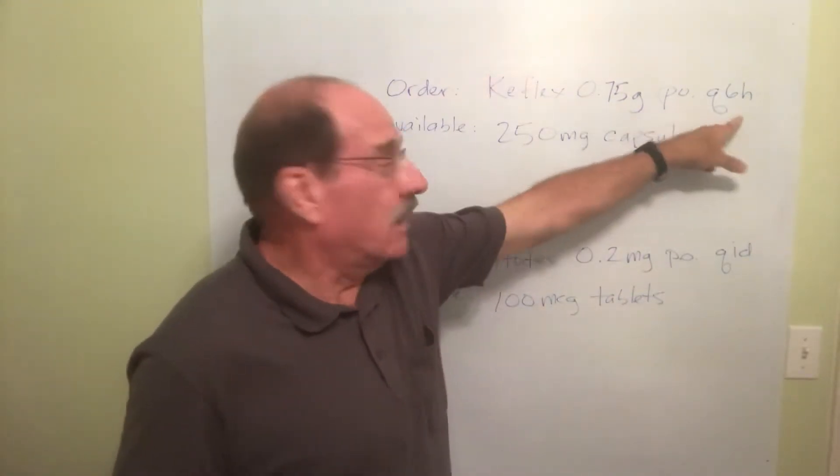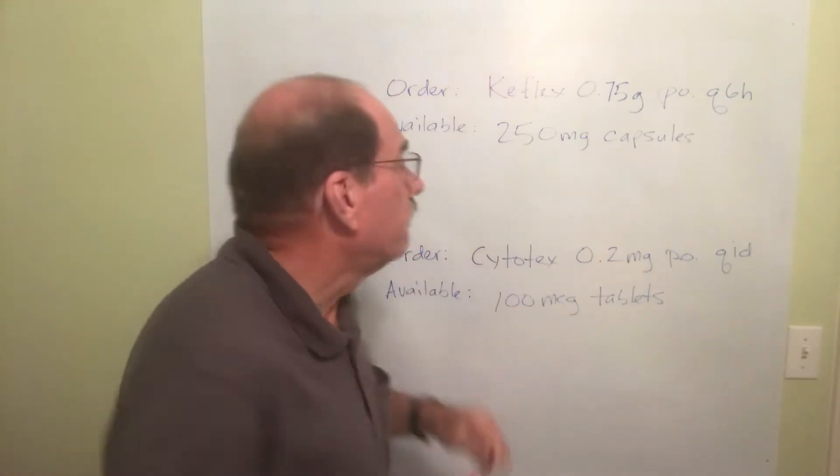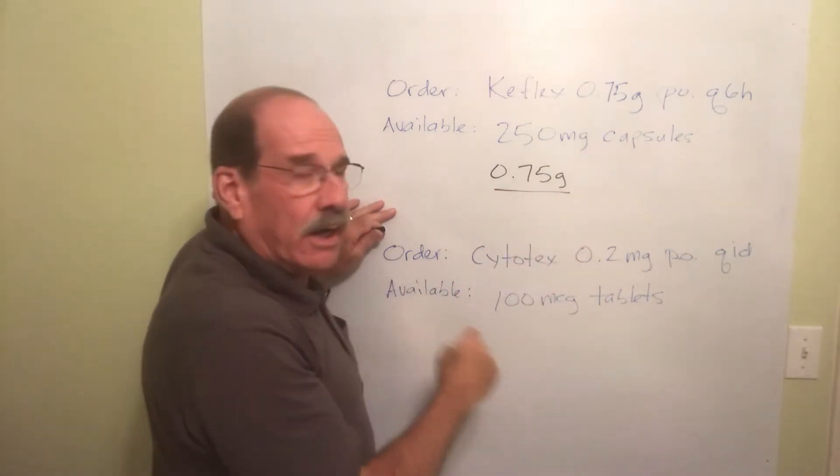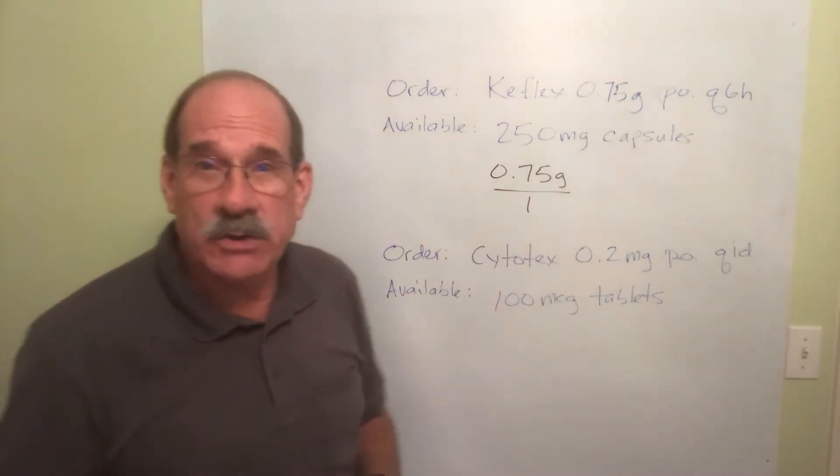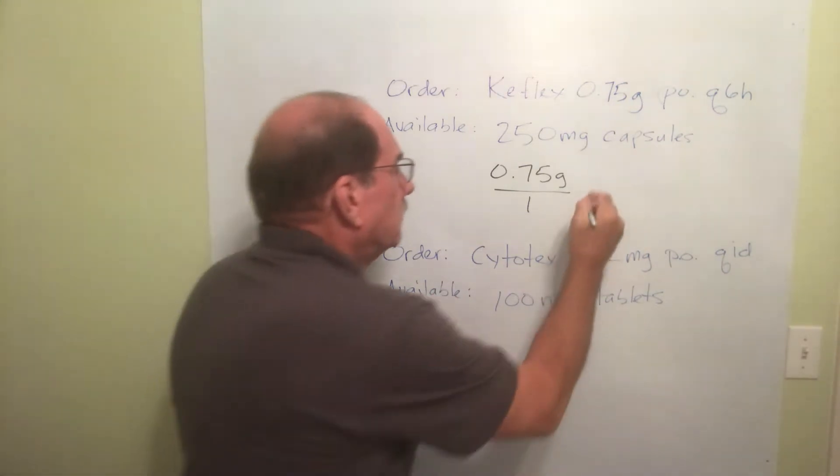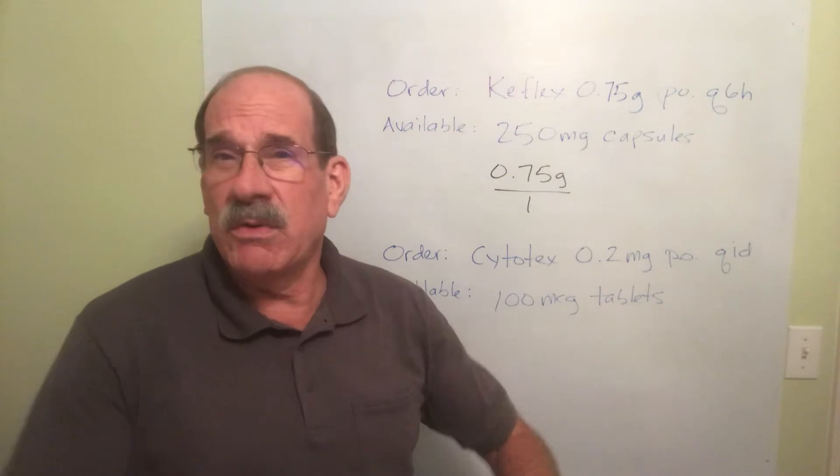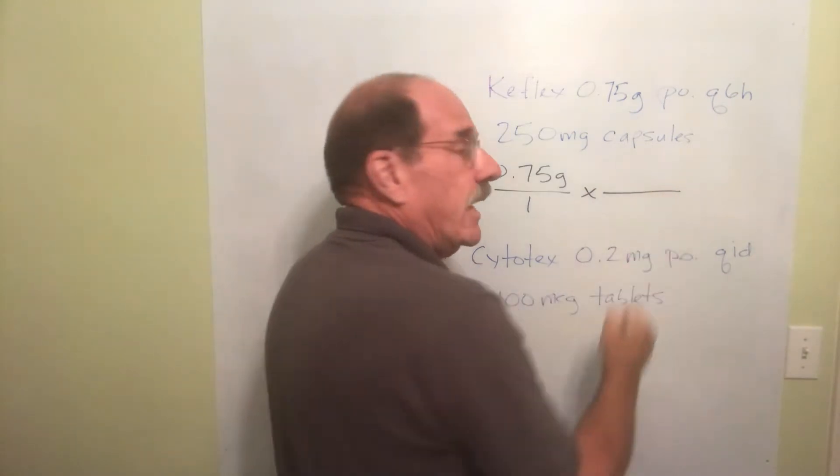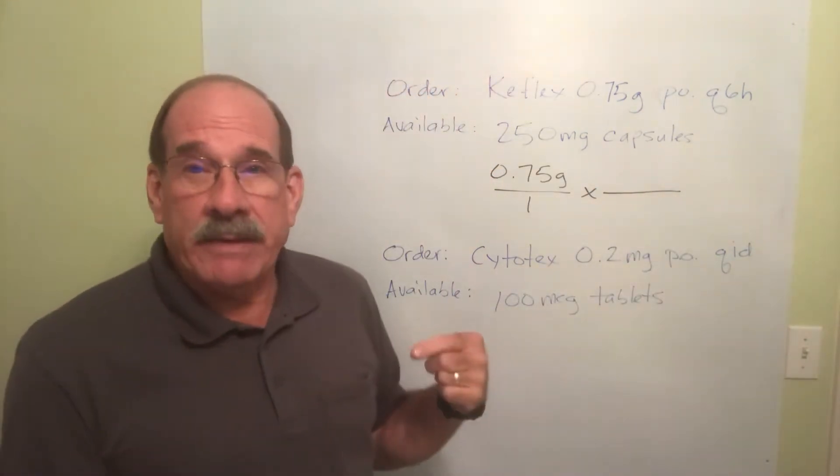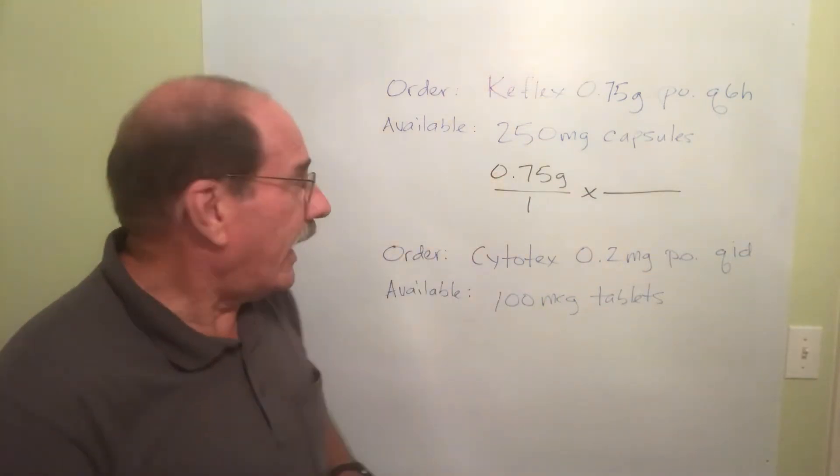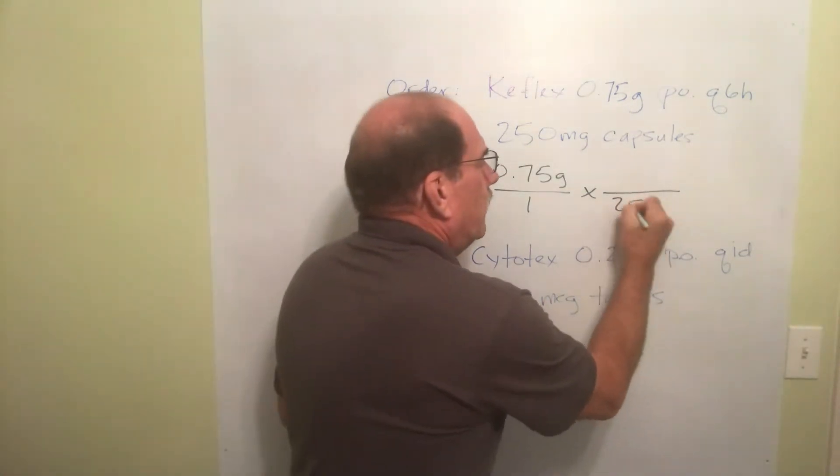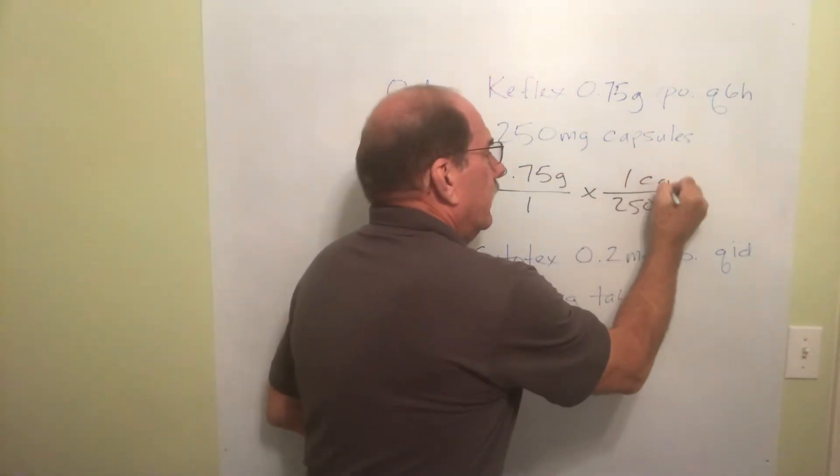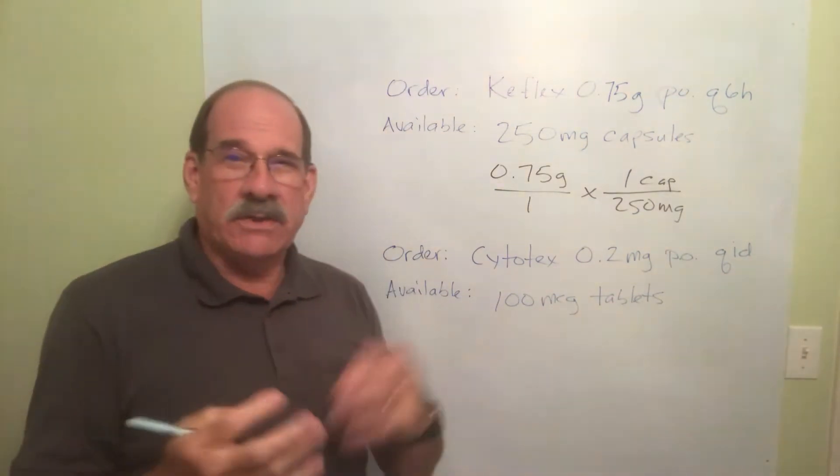We'll write the order down: 0.75 grams. Next job: put it over one to make it a fraction. Next thing, by the way, if you haven't watched the previous videos you won't know what I'm talking about. Then I multiply by a second fraction which will be my dosage strength. I've got 250 milligrams in every capsule, in every one capsule.